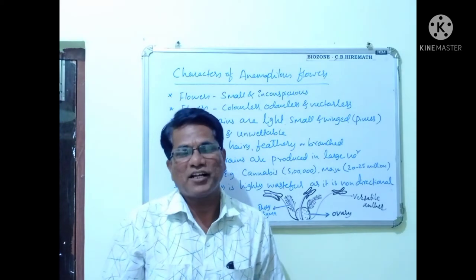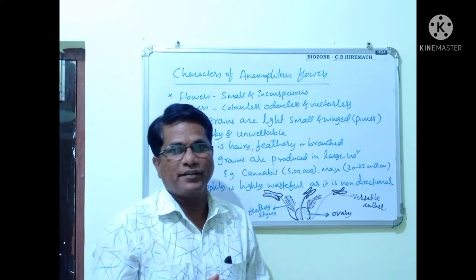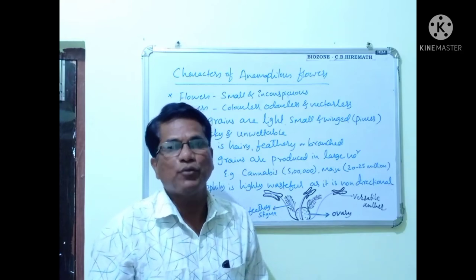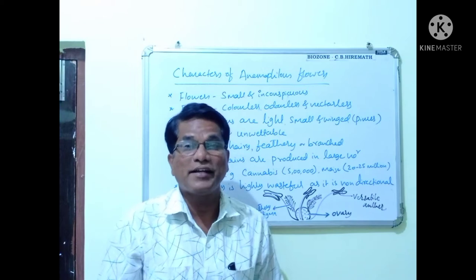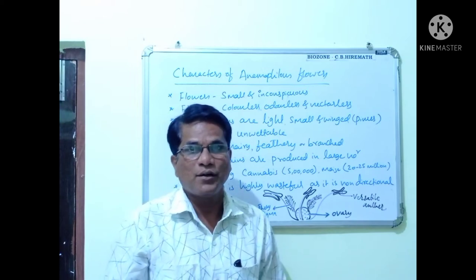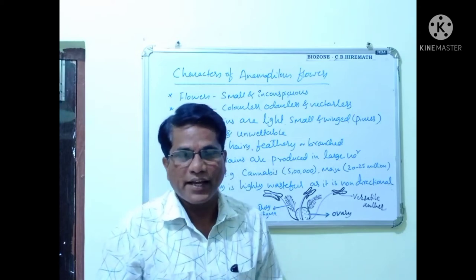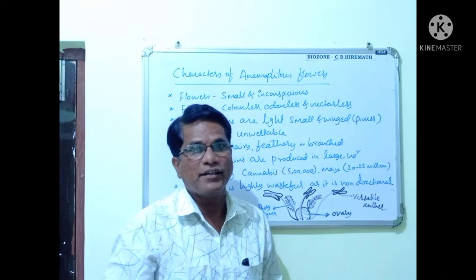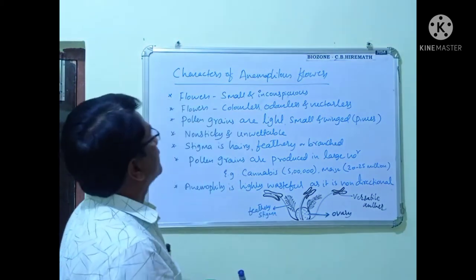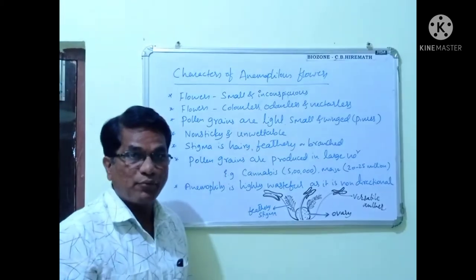Hello students, welcome to my channel Biozone. In this class I will explain the characteristic features of anemophilous flowers. In the last class I told you about pollinating agents, and wind is an abiotic agent. If pollination occurs by wind, it is called anemophily.